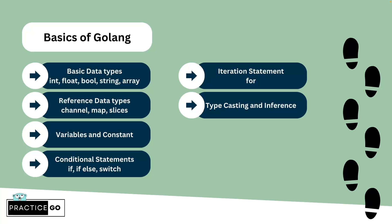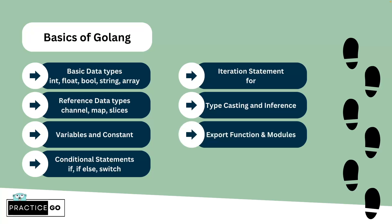For type casting and inference, there is no implicit type casting in Golang. If you assign an integer value to a float variable, it will throw a compiler error. You have to explicitly convert the integer to a float first. For exporting functions, there is no export keyword — you just capitalize the first letter of the function name and it will automatically be exported.